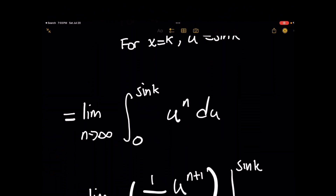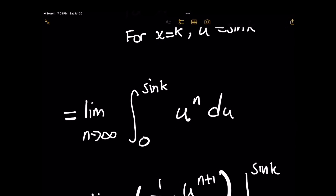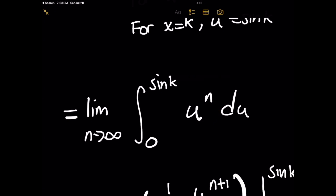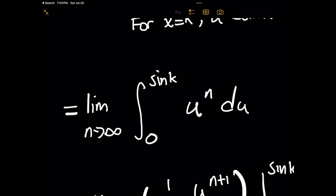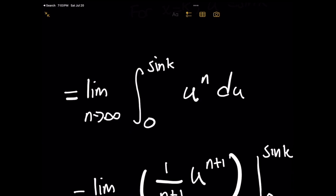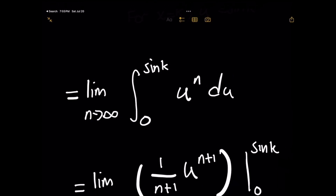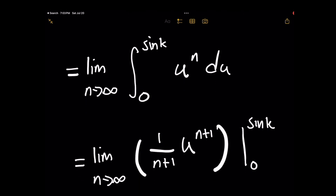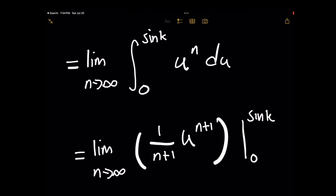Moving forward, we now have the limit as n approaches infinity of the integral from 0 to sine of k of u to the n du, because we've transformed everything in terms of u. Note that n approaching infinity doesn't change just because we transformed x to u — we don't have to do anything with the n term because we didn't touch it.